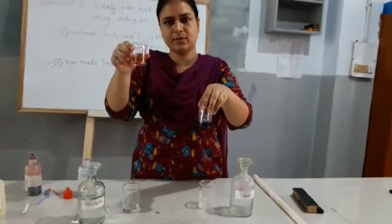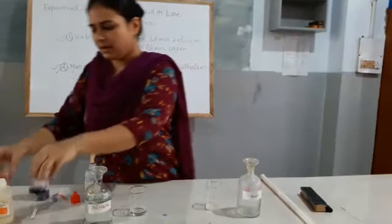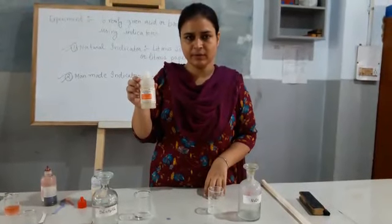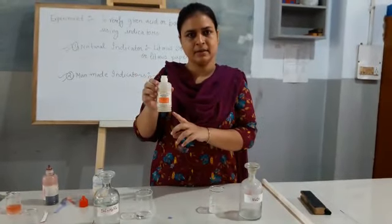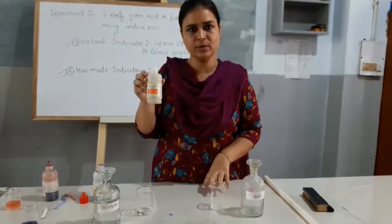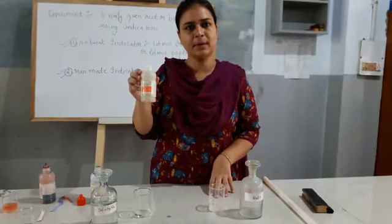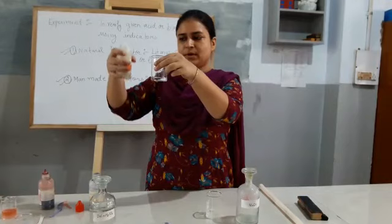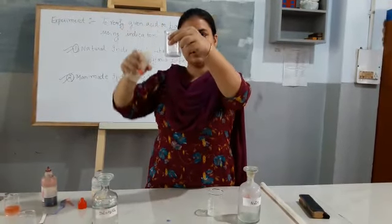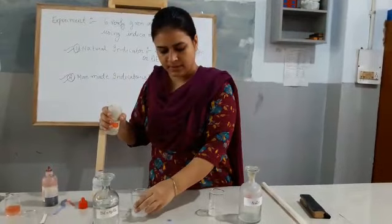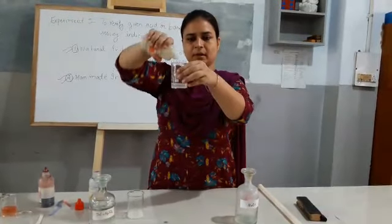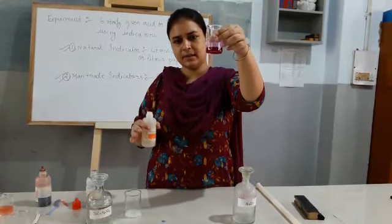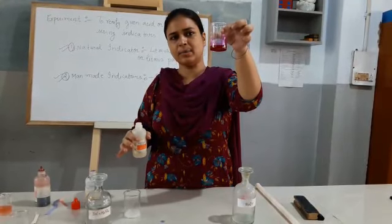This was our natural indicator — that was litmus solution as well as litmus paper. Now, the second part is the man-made indicator, that is phenolphthalein. In acid, phenolphthalein gives no change in color, and in base, it changes to dark pink color. I have taken sulfuric acid in this beaker. I am putting phenolphthalein in it — see, there is no change in color. But when I put it in the base, see the dark pink color. So phenolphthalein in acid remains colorless, and in base it changes to dark pink color.